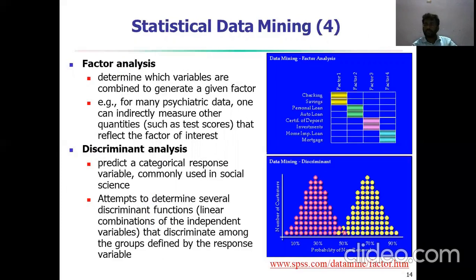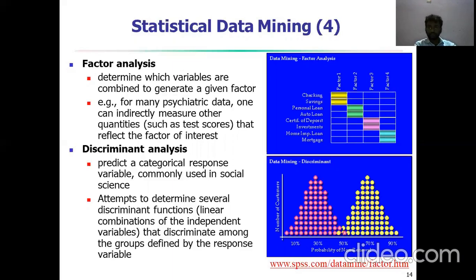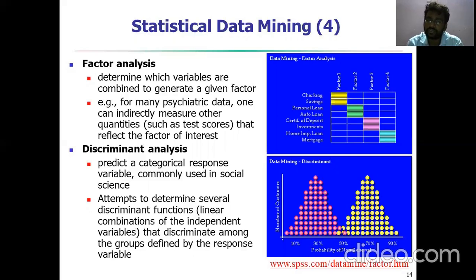In factor analysis, determining which variables combine to generate a given data factor, for example, one of the indirect measures of quantities that reflect the factors of interest, is the key goal. Discriminant analysis predicts categorical response variables, commonly used in social sciences. It determines several discriminant functions — linear combinations of independent variables — that discriminate among groups by response. The percentage of discriminations is displayed using a graphical representation.